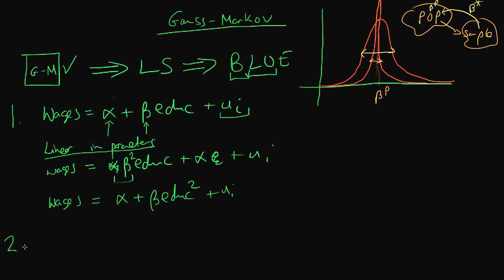Brilliant. So that's the first Markov condition. The second condition is that we have a set of sample data XI and YI which are a random sample from the population.